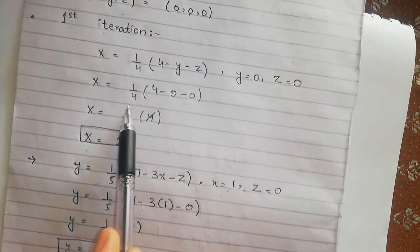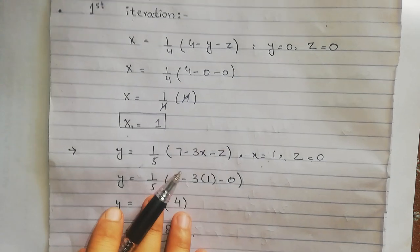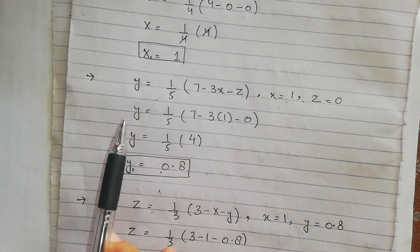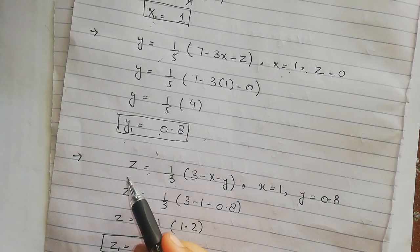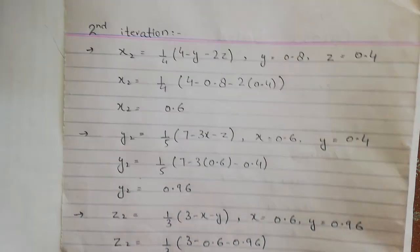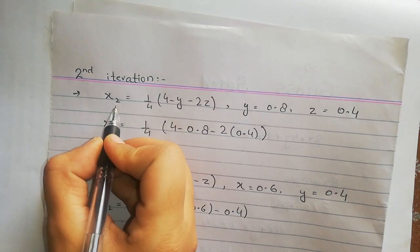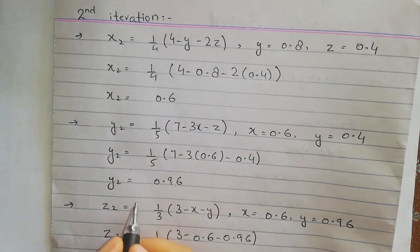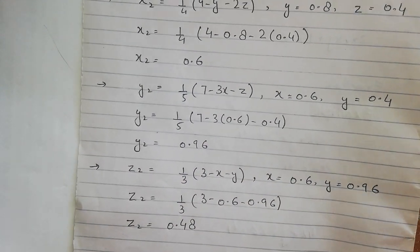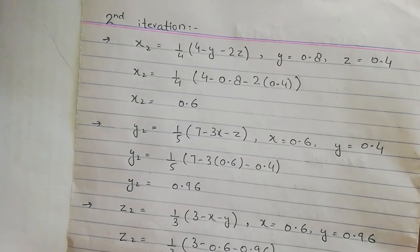So in the first iteration, we obtained three values: x1, y1, and z1. We label them accordingly. When we proceed to the second iteration, we will label the values as x2, y2, and z2. In the third iteration they will be labeled x3, y3, z3, and so on for iterations 4, 5, and beyond.